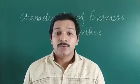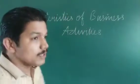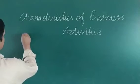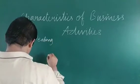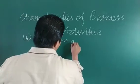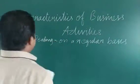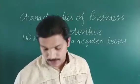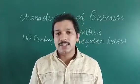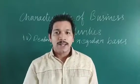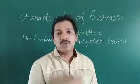Now we have to study the fourth point: dealing in goods and services on a regular basis. Consider this example — I purchased a bike and used it for three years. After that I felt uncomfortable and wanted to purchase a car, so I sold the bike. It is an economic activity because I made a profit and the money motive is there, and a purchase and sale also took place.